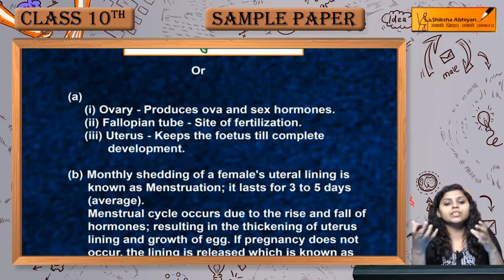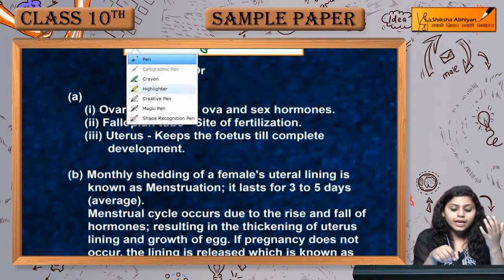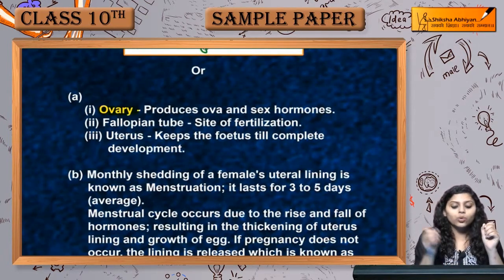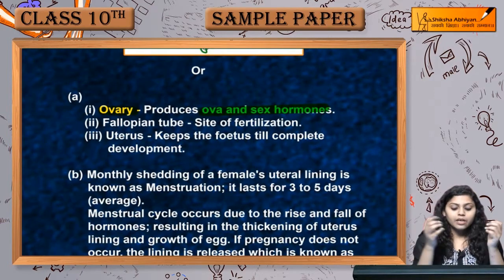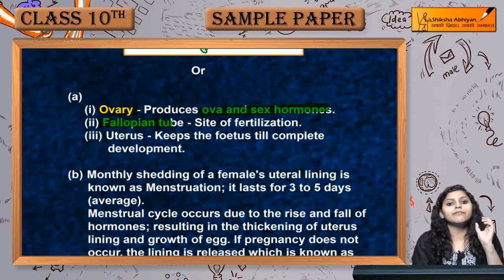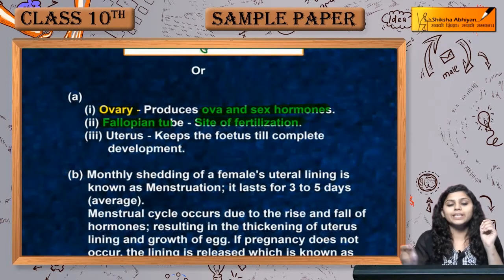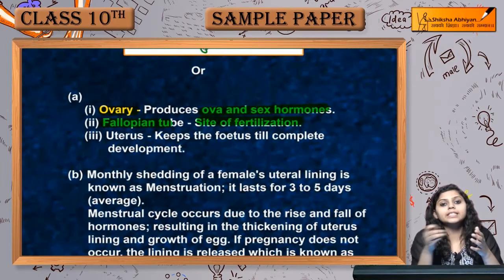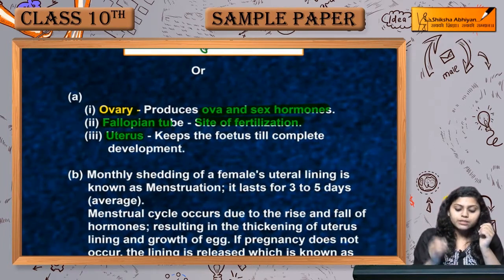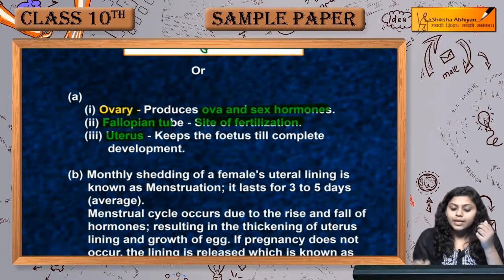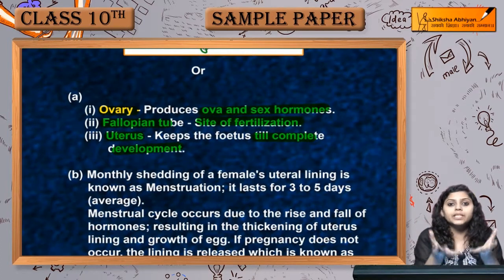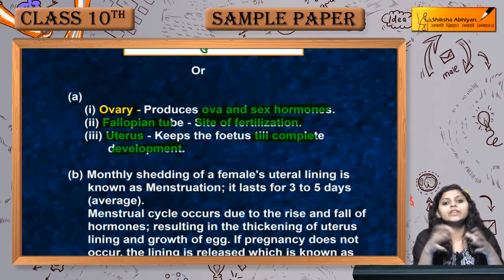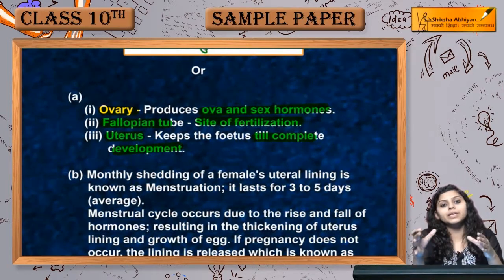Now, human female reproductive system mein kya-kya functions hain? Ovary produce karti hai ova and sex hormones. Fallopian tube site hai fertilization ki, jahan pe sperms aakar egg ke saath fertilize karte hain. Uterus mein fetus tab tak survive karta hai jab tak wo completely develop nahi ho jaata — uterus fetus ko till pregnancy rakhta hai.